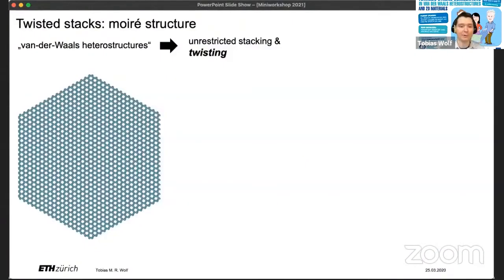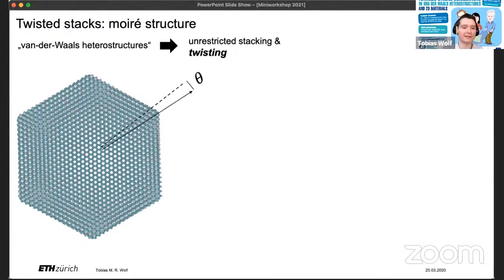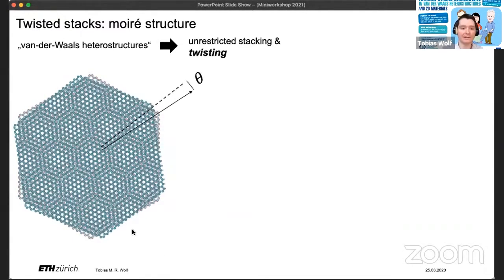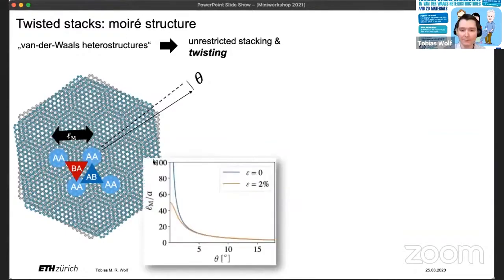So I will also quickly recap twisted bilayer graphene, which consists of two layers of carbon atoms in a honeycomb arrangement. We have weak van der Waals interactions, so that means we can stack the two layers at finite angles. And we immediately see that that produces a moiré pattern characterized by regions where we have approximate AA stacking and regions where we have approximate AB and BA stacking. These regions repeat on a length scale of the moiré length, which grows when we make the twist angle smaller and it can be tens to hundreds of lattice constants.